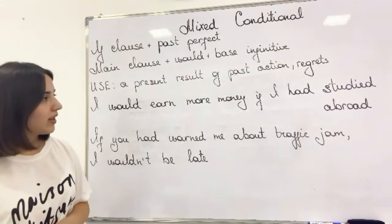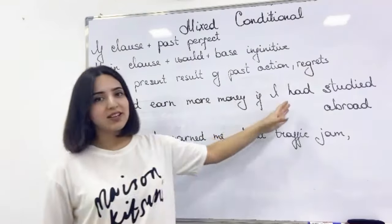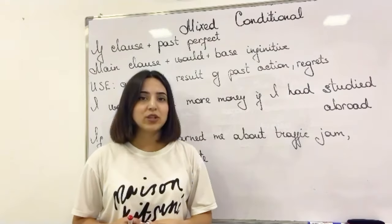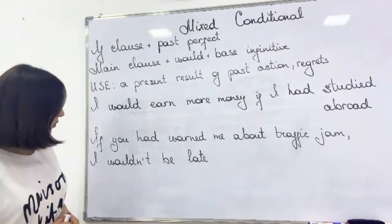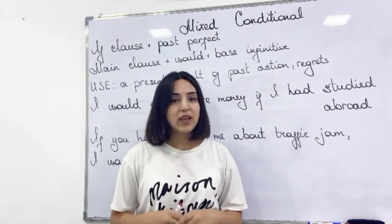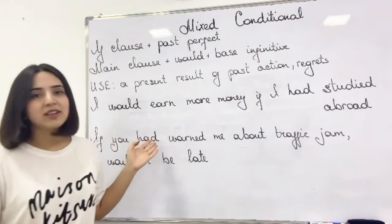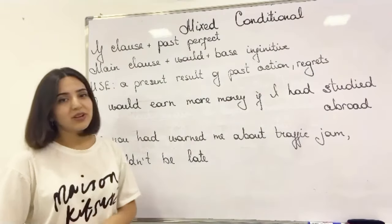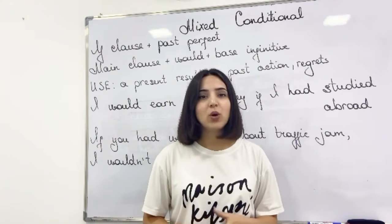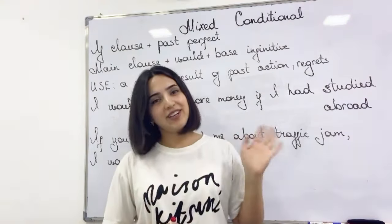For example: I would earn more money if I had studied abroad. So it's a past action and we see a present result — I didn't study in a foreign country, that's why I can't earn as much money as I wish. Or: if you had warned me about the traffic jam, I wouldn't be late. My colleague didn't inform me about how heavy the traffic was, and that's why I was late — I am late for my work. So she or he didn't inform me in the past, and as a result in the present, I am late for my work. That's all about conditionals. I hope it helped you, and I hope you learned something about conditionals and will be able to use them properly in your speaking. Have a nice day. See you.